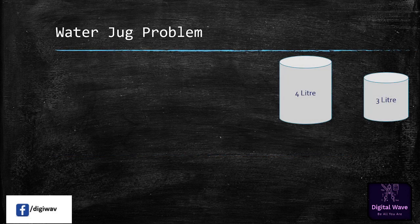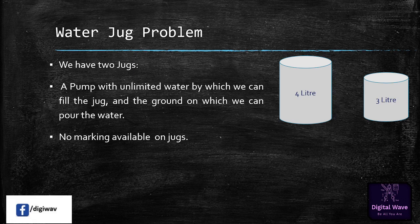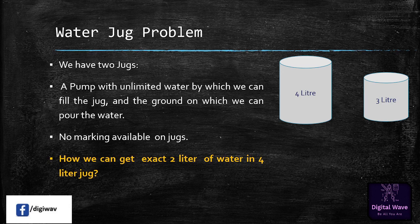In this tutorial on artificial intelligence, today we will discuss the water jug problem. We have two jugs: one with a capacity of 4 liters and another of 3 liters. We also have a pump with unlimited water to fill the jugs, and a ground where we can pour the water. There is no marking available on the jugs to measure the quantity of water. The goal state is to get exactly 2 liters of water in the 4-liter jug.